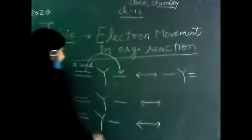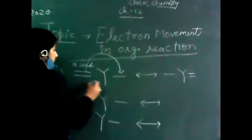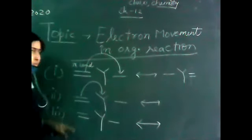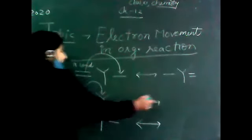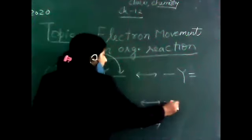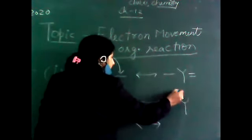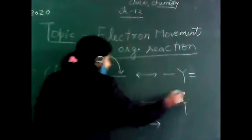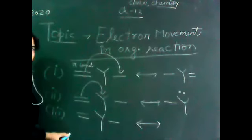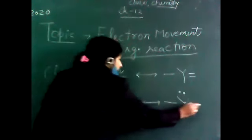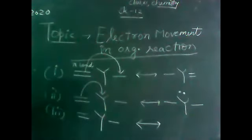The second method: I will put pi bond to the electron atom. So this will become a single bond. Now, the Y atom will have a lone pair, because the pi bond electrons will be present in the lone pair, and both sides will remain single bond.